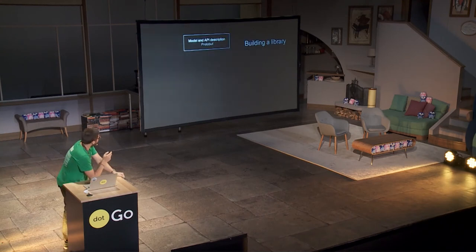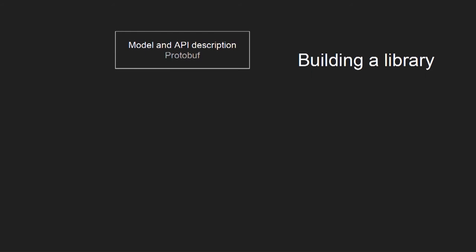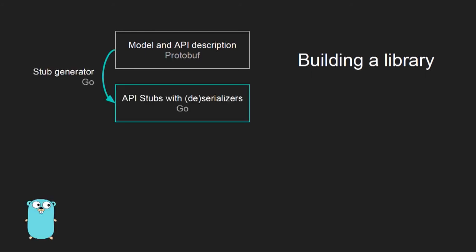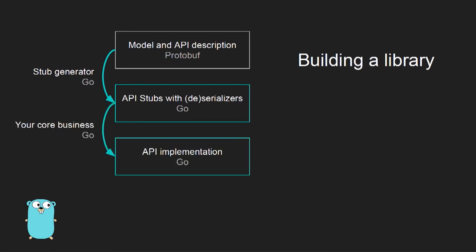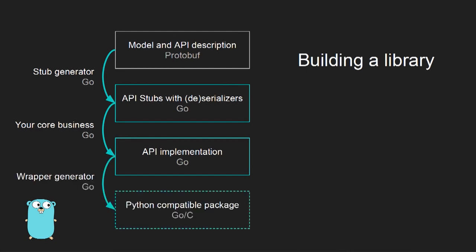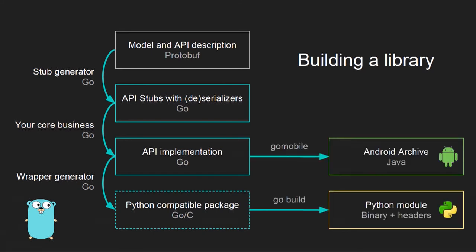So, to recap: you start from a model and API description in Protobuf. You write a stub generator in Go that produces API stubs in Go. From those stubs, you implement your logic — your core business — giving you your API implementation. If you annotate it and write a wrapper generator in Go, you will have a Python-compatible package which is Go plus C files. From those source files, you use the standard Go tools to produce both an Android archive and a Python module.